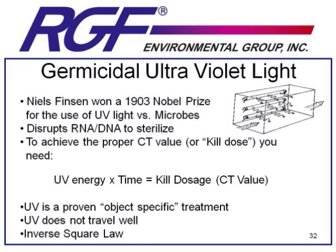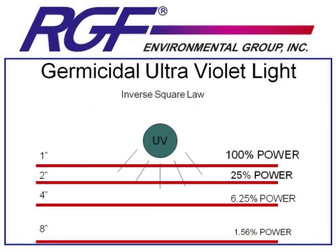UV light is a proven object-specific treatment, but does not travel distance as well. All light is affected by the inverse square law — this includes traditional UV systems, the sun, fluorescent lamps, all light in general. The inverse square law simply states that as you double the distance from a light source, any particular point will receive only a quarter of that light source's power.